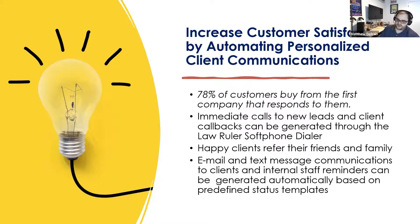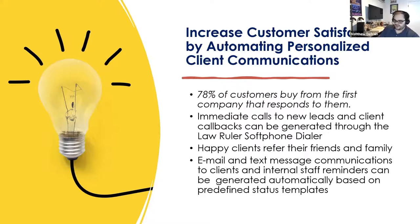You want to create automation inside of LawRuler to do that. You can put them on drip campaigns triggered by statuses. 'Do Not Hire' can trigger a drip campaign that sends an email out once a month — or however often you'd like — and it could say whatever you'd like. You could send out newsletters, updates about the firm, cases, anything. This is going to ensure that you stay top of mind.